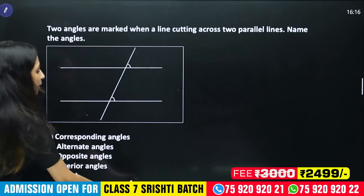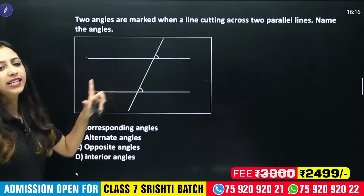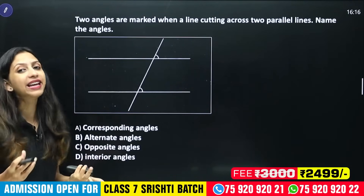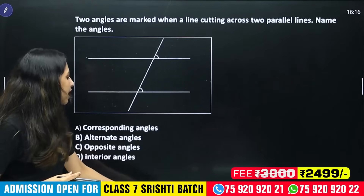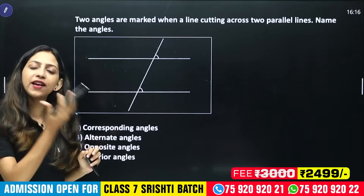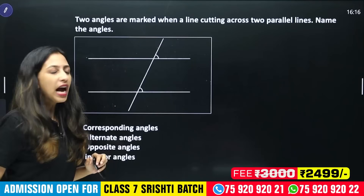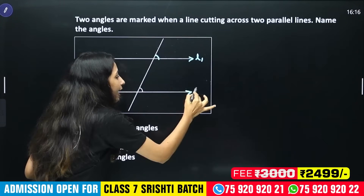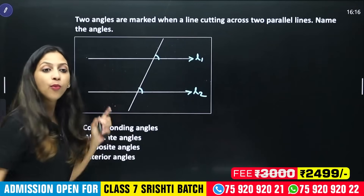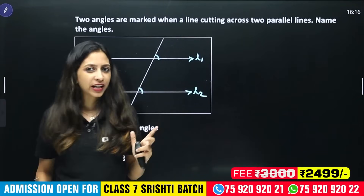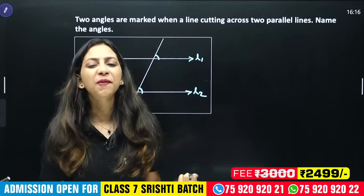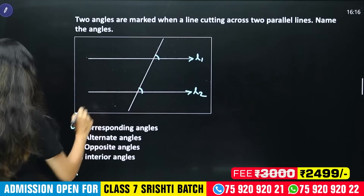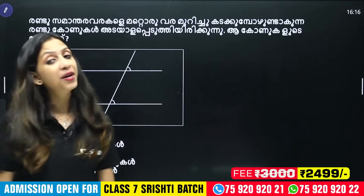What are the main angle types here? What type of angles are these? On the same side, we look at the corresponding angles. Corresponding angles are in the same position at each intersection — they are equal.